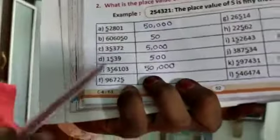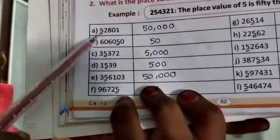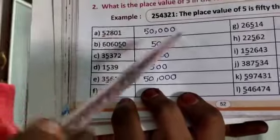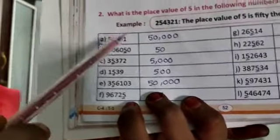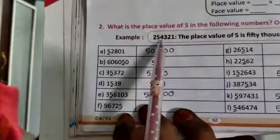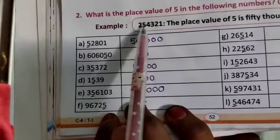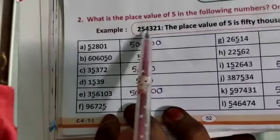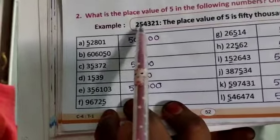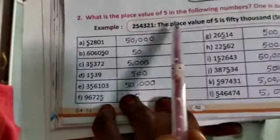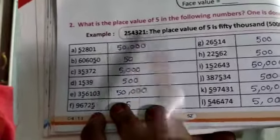One is done for you. We need to find the place value of 5 in each number. If 5 is in a given place, the place value is 5 multiplied by that place — ones, tens, hundreds, thousands, or 10,000 place. For example, the place value of 5 in the 10,000s place is 5 × 10,000 = 50,000.